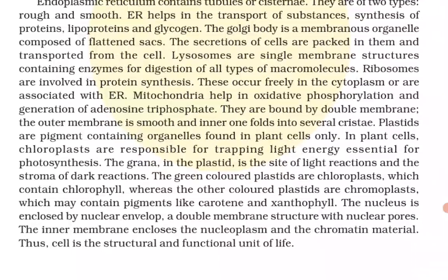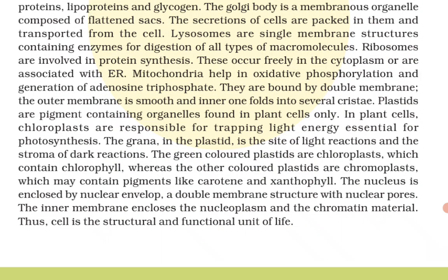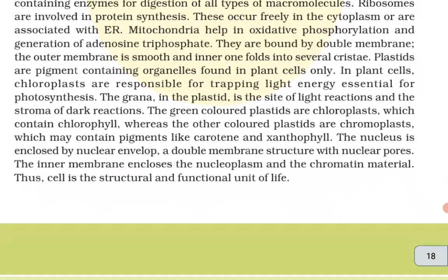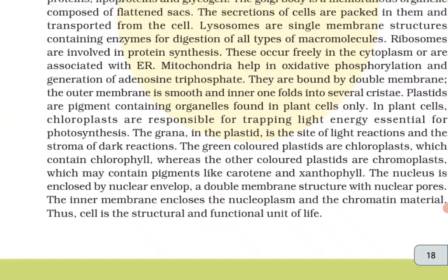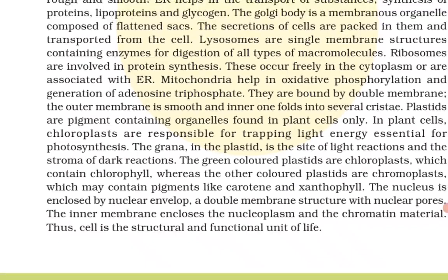Ribosomes are involved in protein synthesis; they occur freely in the cytoplasm or are associated with endoplasmic reticulum. Mitochondria help in oxidative phosphorylation and generation of ATP; they are bounded by a double membrane — the outer membrane is smooth and the inner one folds into several cristae. Plastids are pigment-containing organelles found only in plant cells; chloroplasts are responsible for trapping light energy essential for photosynthesis. The grana in plastids are the site of light reactions and the stroma of dark reactions. The nucleus is enclosed by the nuclear envelope, a double membrane structure with nuclear pores. Chapter completed — if you like this video please like, share, and subscribe to my channel.